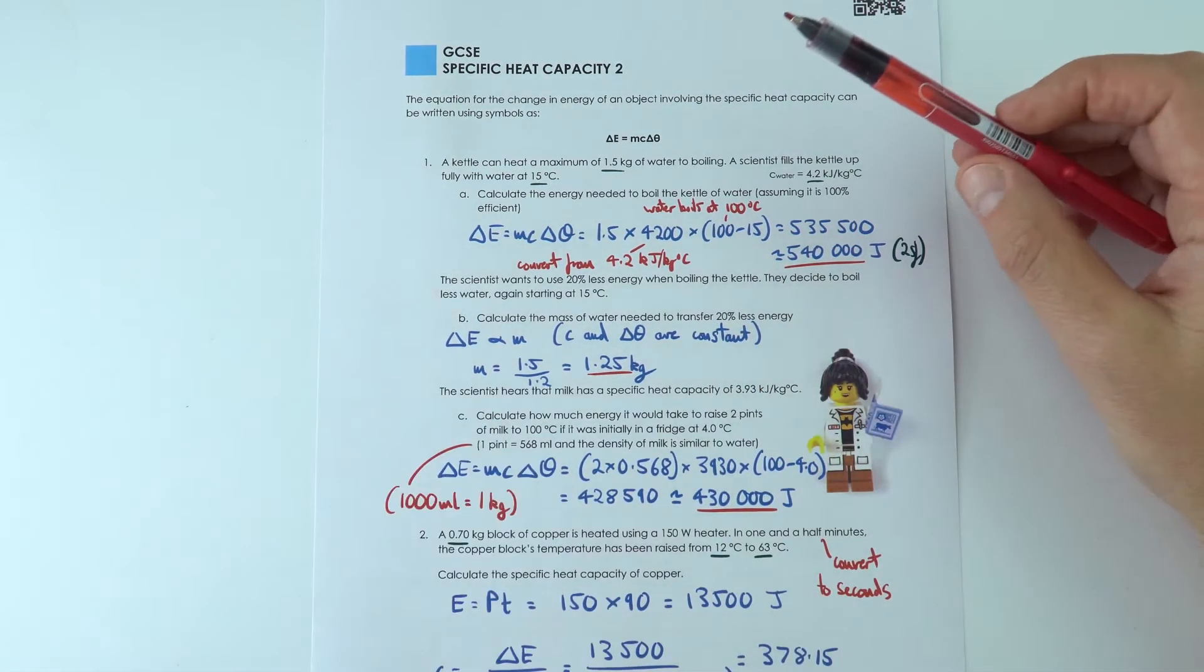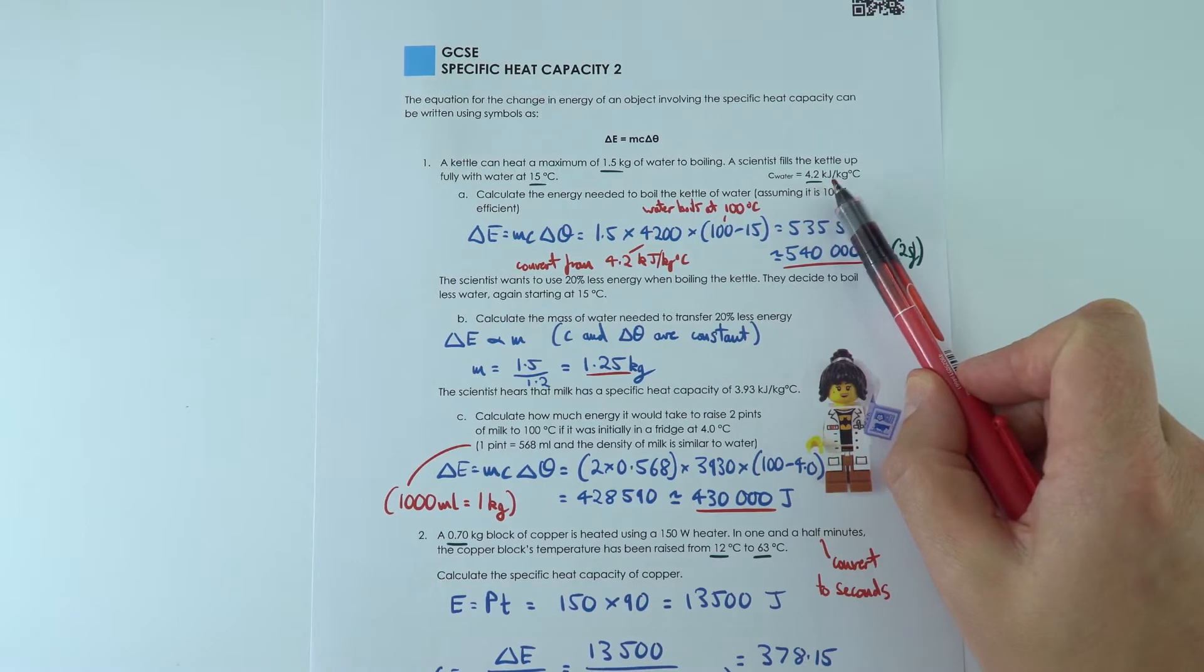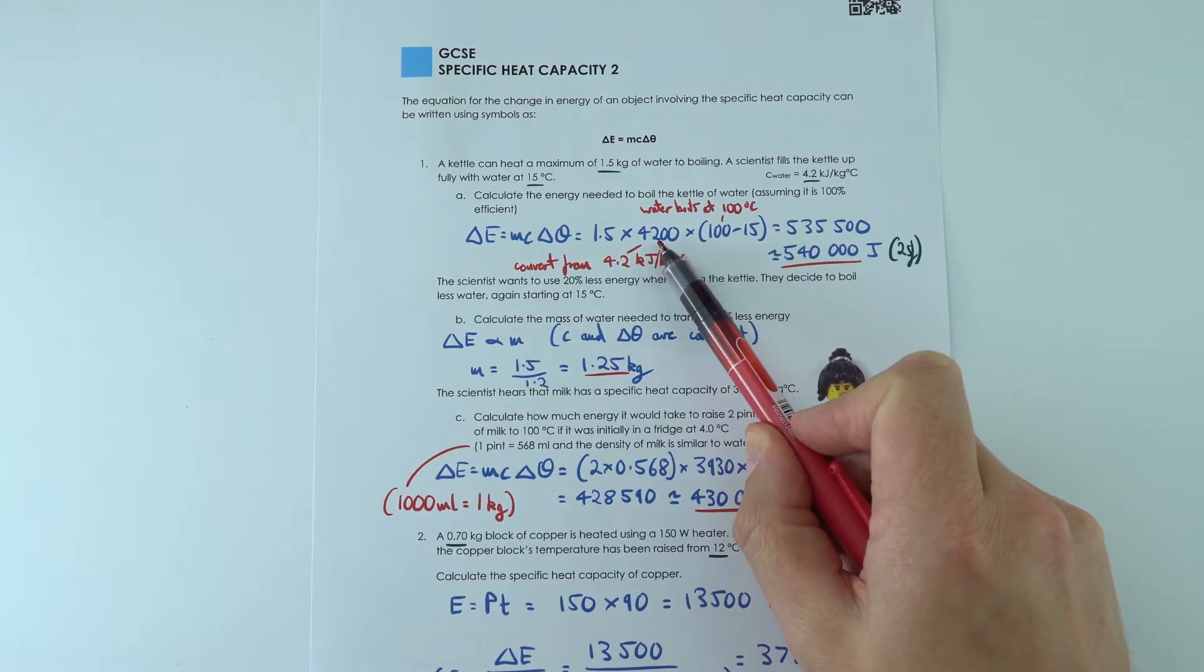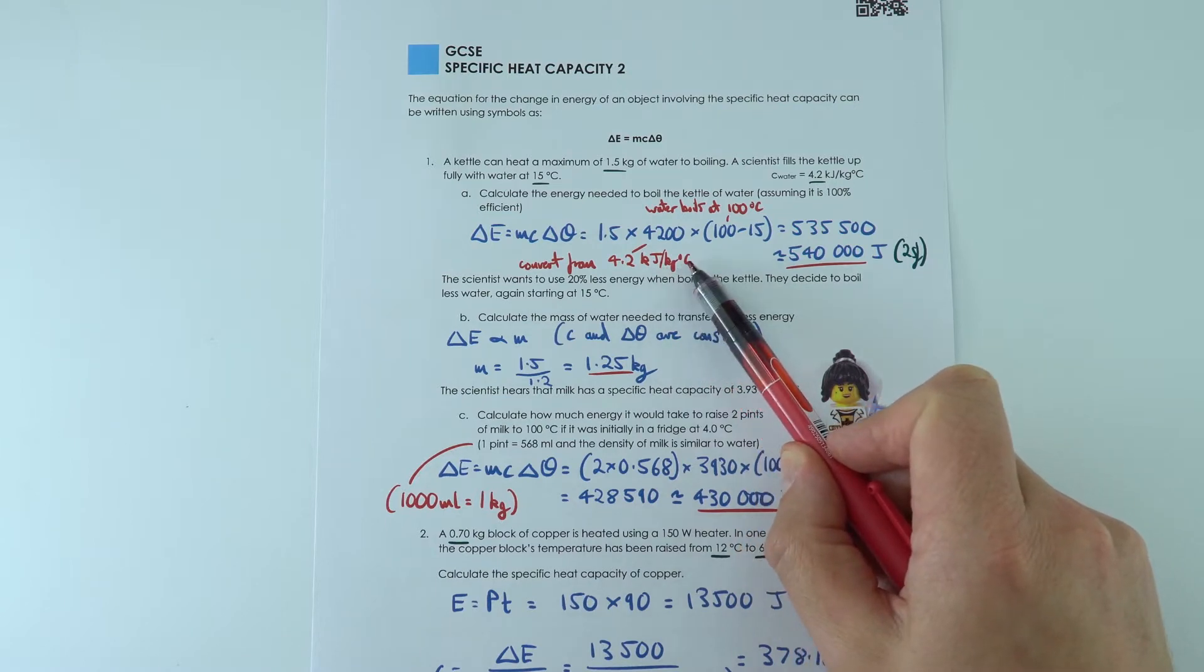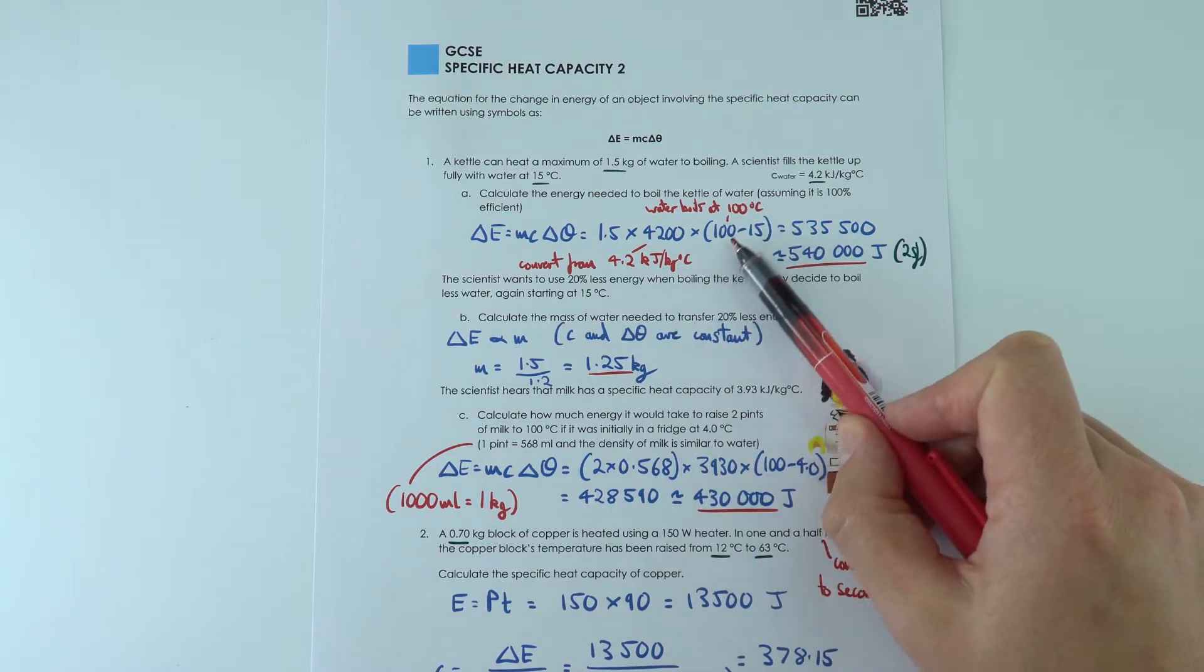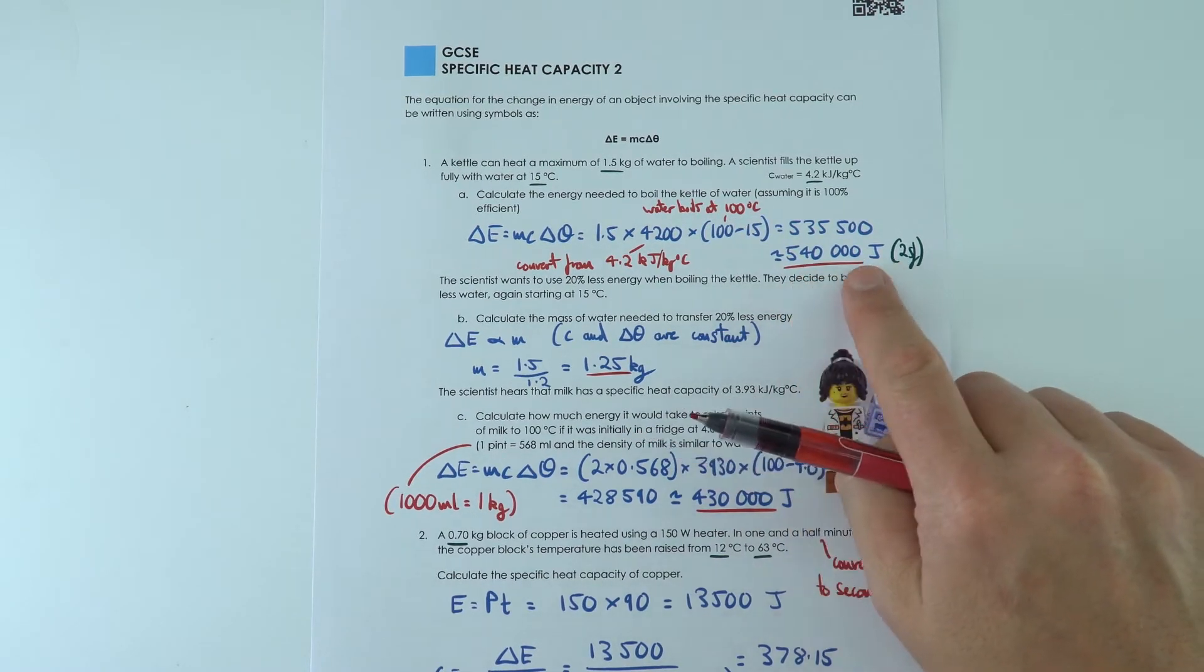The first one, we've been given data with 4.2 kilojoules. I'm converting it to 4,200 joules per kilogram per degree Celsius. The other bit of information that's implied is that water, pure water, boils at 100 degrees Celsius. So that gives 5,400 joules.